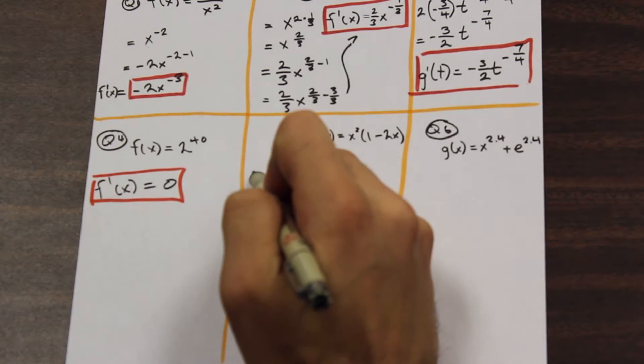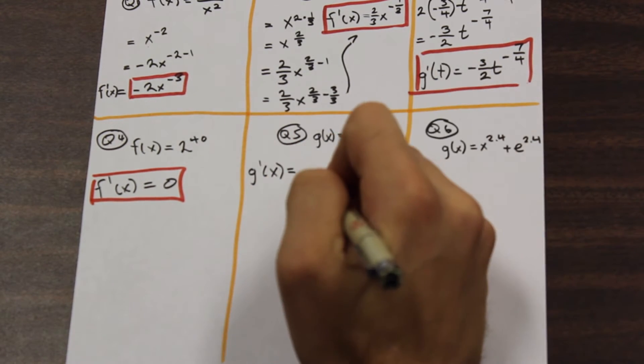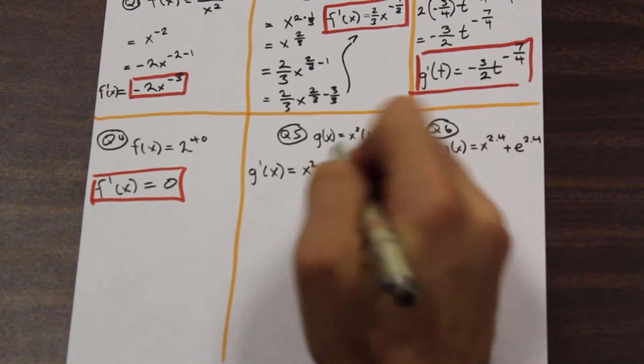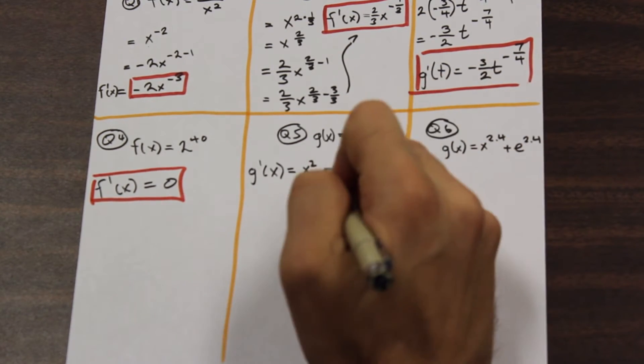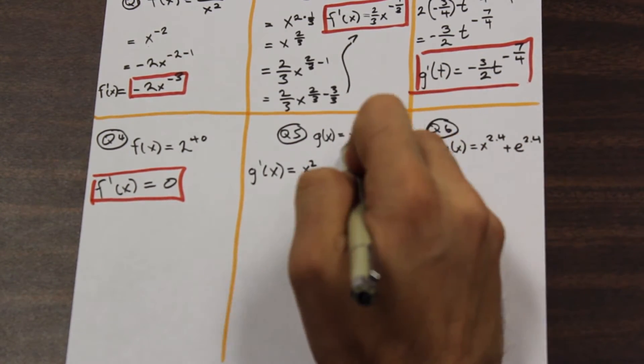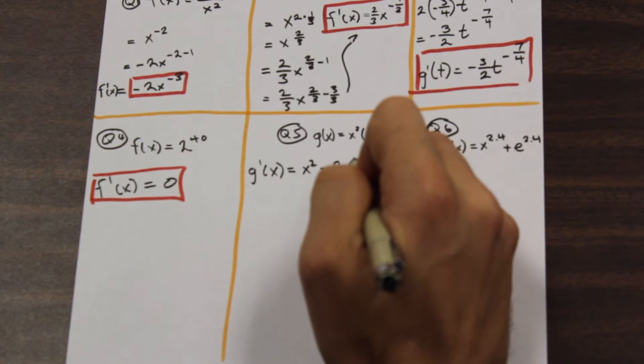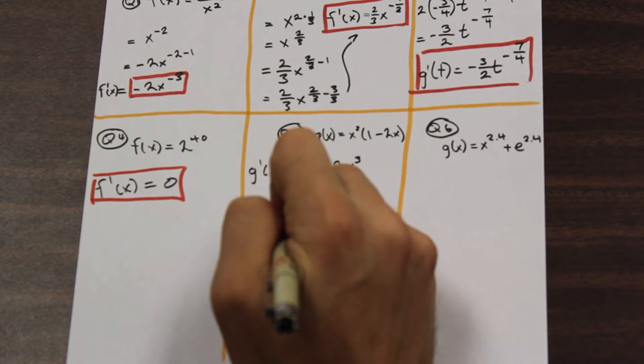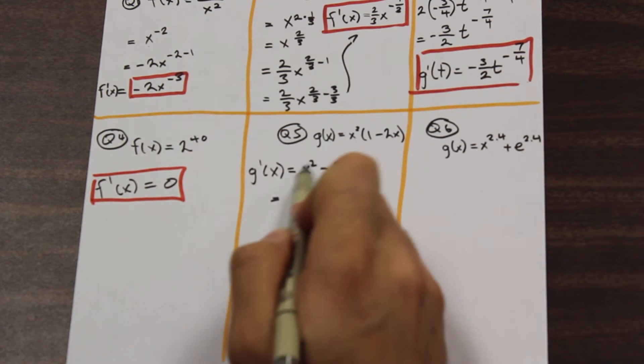Question 5. Let's find g prime of x. So let's go ahead and expand this. Later, we can show you how to maybe use a different tool to evaluate this, but for now, we're just going to expand. x squared times negative 2x is going to be 2x cubed. And we can go ahead and take the derivative of each term separately.